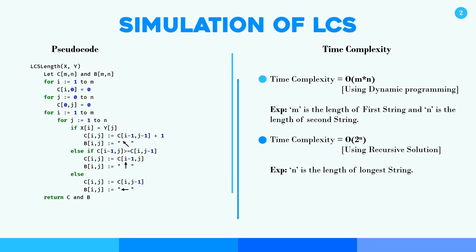Now what is the time complexity of this algorithm? With the dynamic programming approach, we iterate a nested loop, so it will be M times N — Big O of M×N. There is also a recursive solution, which takes 2 to the power N, which is exponential. Since exponential takes more time than M×N, that's why we use dynamic programming for finding LCS. Thank you.